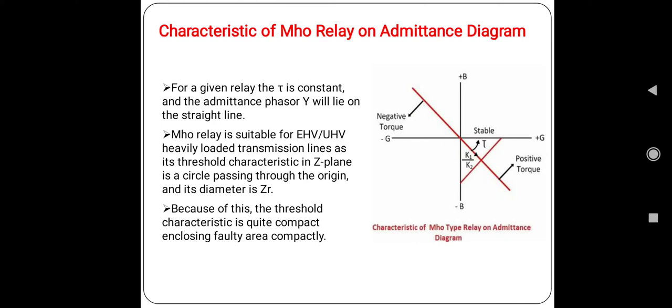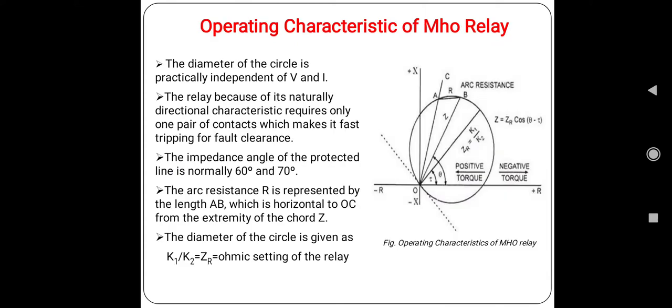Mho relay is suitable for long extra high voltage and ultra high voltage heavily loaded transmission lines. Its threshold characteristic in the Z plane is a circle passing through the origin, and the diameter is ZR. This is the ohmic setting of the relay.